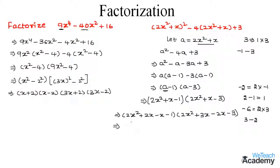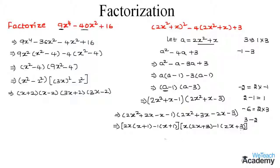From the first two terms, taking 2x as a common factor we get 2x into x plus 1, and taking minus 1 as a common factor gives minus 1 into x plus 1. Now take x plus 1 as a common factor to get x plus 1 into 2x minus 1. For the second expression, taking x as a common factor gives x into 2x plus 3, and taking minus 1 as a common factor gives minus 1 into 2x plus 3. Taking 2x plus 3 as a common factor gives 2x plus 3 into x minus 1.